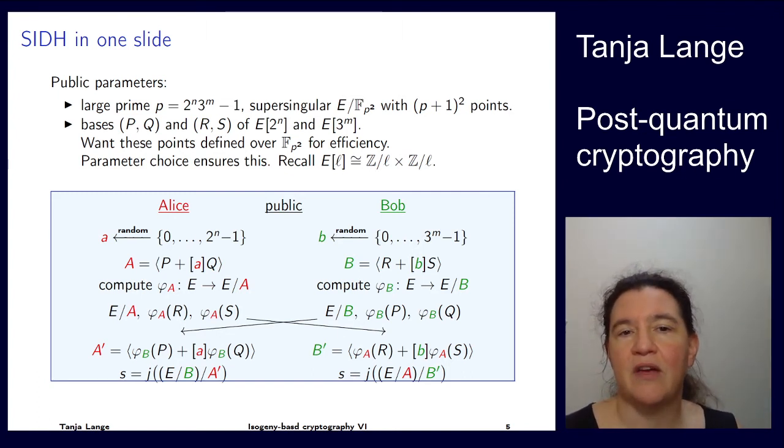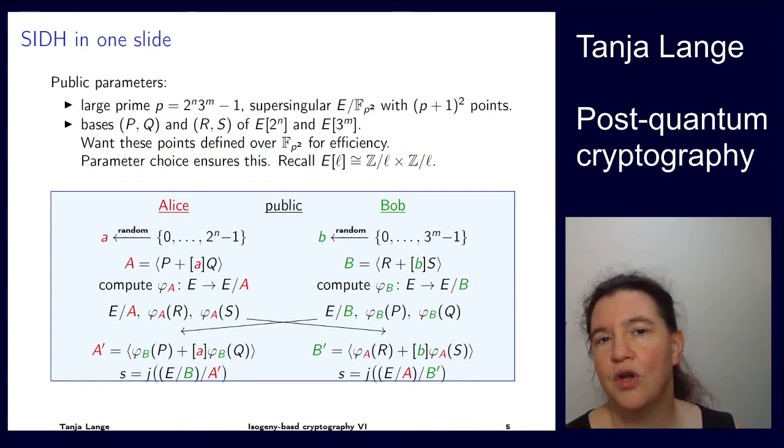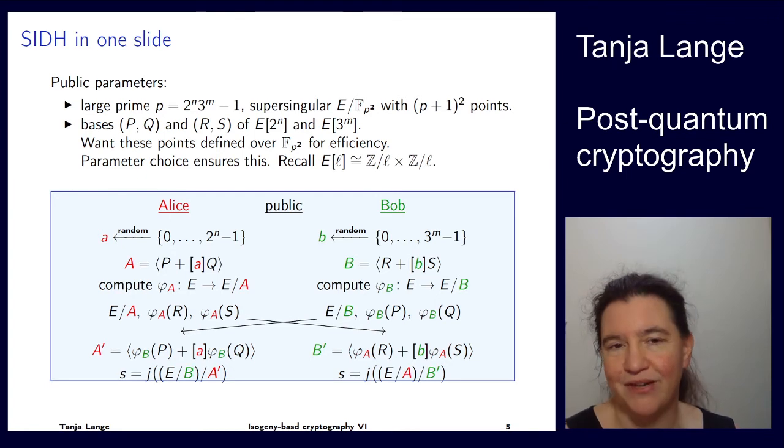Okay, so that means all our computations will be over fp squared. And we choose our p such that it's secure, but we have control. Then we have the basis for the 2 to the n torsion here, 3 to the m torsion here. And then Alice has to push Bob's base points through, Bob has to push Alice's base points through. And then this is how actually this key exchange looks like. So both of them get their secret as a J-invariant of this curve. And because the A prime is compatible with the A, the B prime is compatible with the B, they always get the same J-invariant.